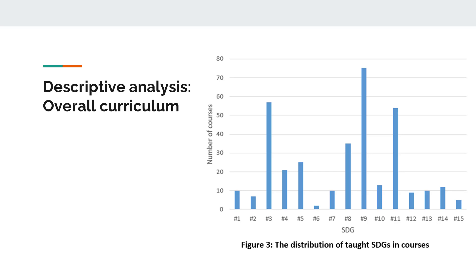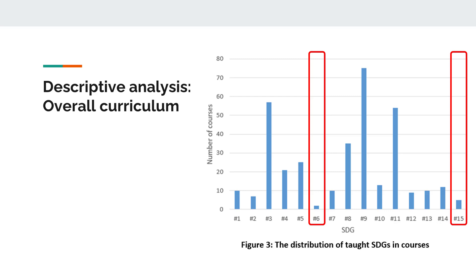The Faculty of Medicine offers a significant number of medical health courses. Meanwhile, Humanities teachers also offer courses that teach about well-being and mental health. On the other hand, SDG 6 – Clean Water and Sanitation and SDG 15 – Life on Land are the least mentioned SDGs in courses.